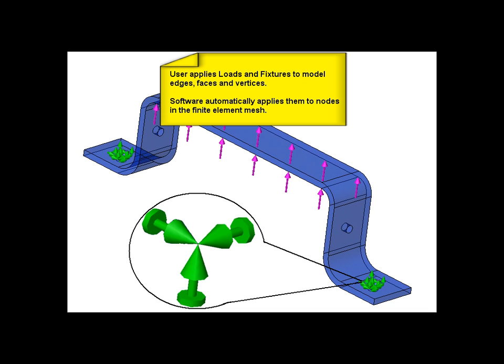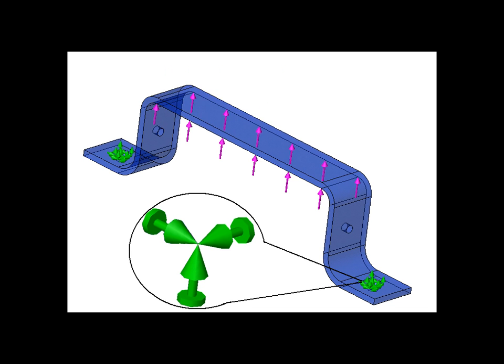The user applies loads and fixtures to model faces, edges, and vertices. But the simulation software actually applies them to the nodes of the elements, which you cannot see.